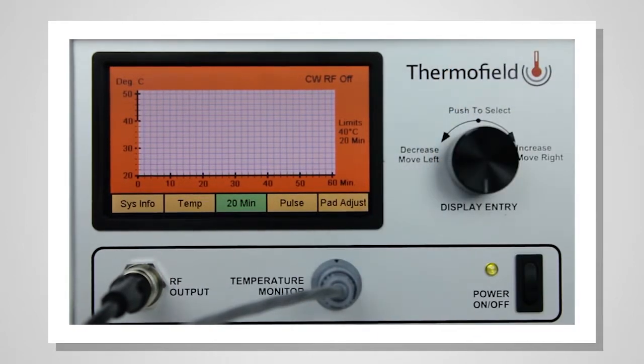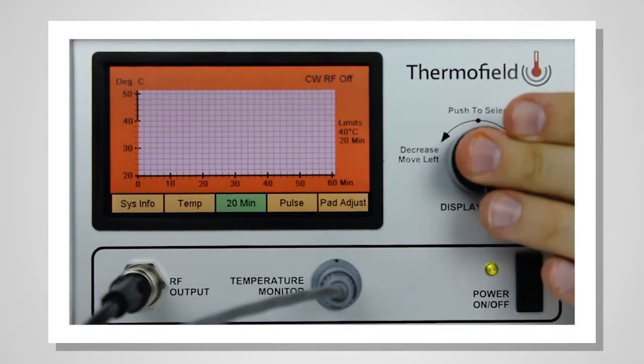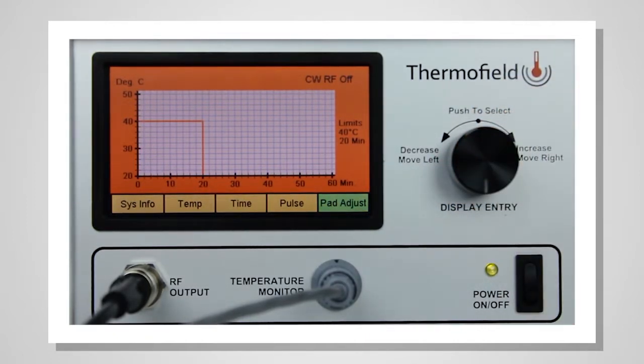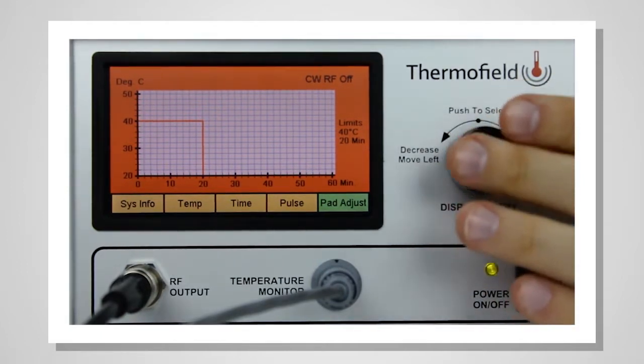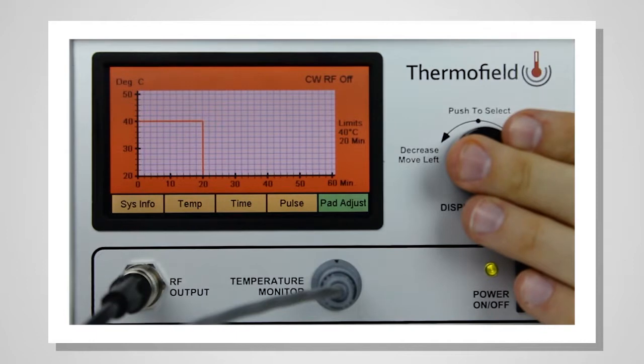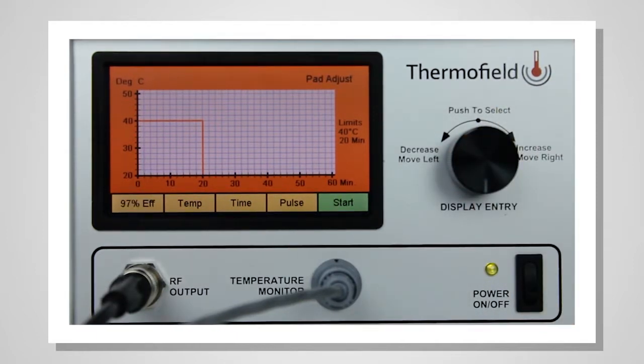Once you've confirmed the treatment time, the PAUSE pane will be highlighted and will read PAD ADJUST. Appropriately place the pad on the patient and push the knob to adjust the pad for treatment. The pane will then say PAUSE and the status line will display PAD ADJUST.